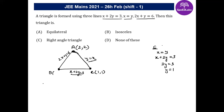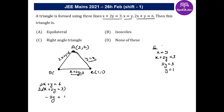For vertex B, solve 2x + y = 6 and x + 2y = 3. Multiplying the second equation by 2 and subtracting: y − 4y = −3y = 0, so y = 0. If y = 0, then x = 3. Therefore vertex B is (3, 0).